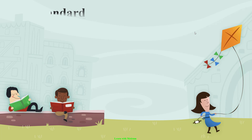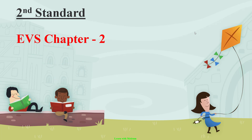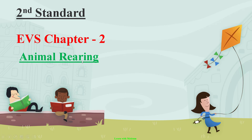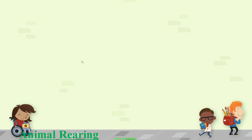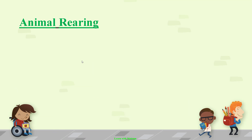Hello kids, welcome back to Learn with Maktum. In this video we are going to continue with the second standard EVS. In the last video we completed Chapter 1, and in this video we are going to study Chapter 2. The chapter name is Animal Rearing.